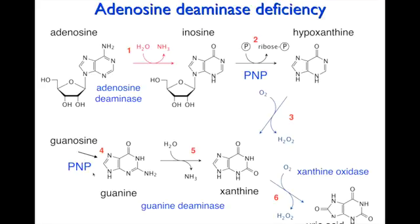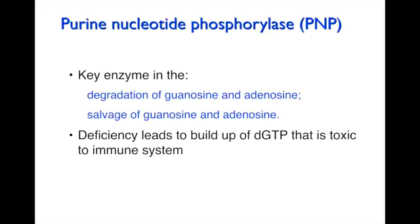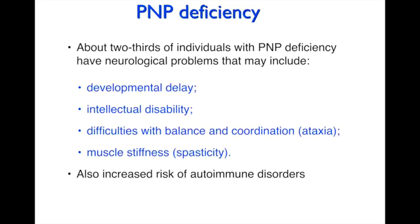A similar story happens with PNP deficiency, but deoxyGTP does not switch off ribonucleotide reductase, so it may not be as severe. With ADA deficiency, there's a lack of virtually all immune protection, along with neurological problems and death at an early age. With PNP deficiency, there's a buildup of deoxyGTP, which is toxic to the immune system, though exactly how is not fully understood. About two-thirds of individuals with PNP deficiency have neurological problems including developmental delay, intellectual disability, difficulties with balance and coordination, muscle stiffness, and increased autoimmune disorders.